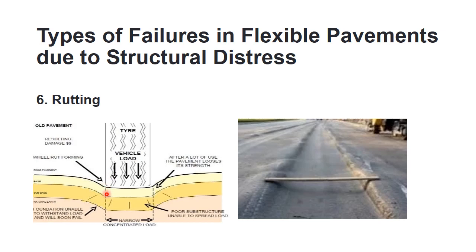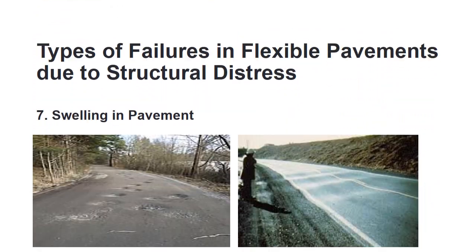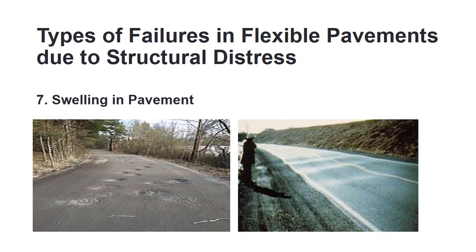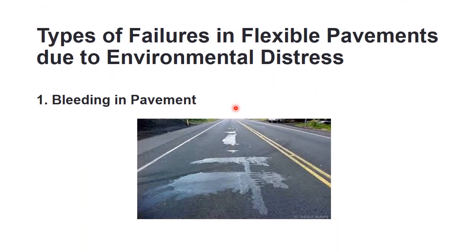The sixth type is rutting, which is formed in the wheel path surface. This depression causes the other side of the wheel path to undergo uplift. The seventh type is swelling, characterized by long gradual waves that can be up to 10 feet long, appearing as an upward bulge in the pavement surface. Pavement cracking is seen after swelling. These are some of the main types of structural distress.